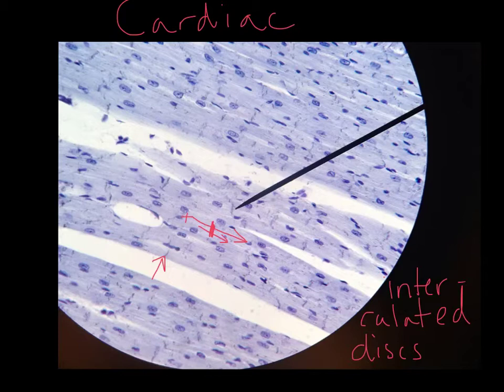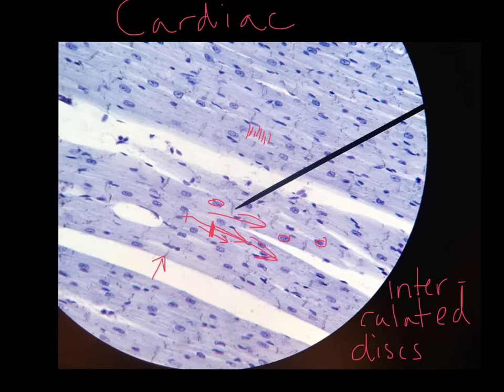Like skeletal muscle, you'll sometimes be able to see fine, tiny striations in cardiac muscle — but those are not the same as intercalated discs. You'll also see nuclei — one nucleus per cell — and branching. Many cardiac muscle cells branch, so you see lots of splits in cardiac muscle.